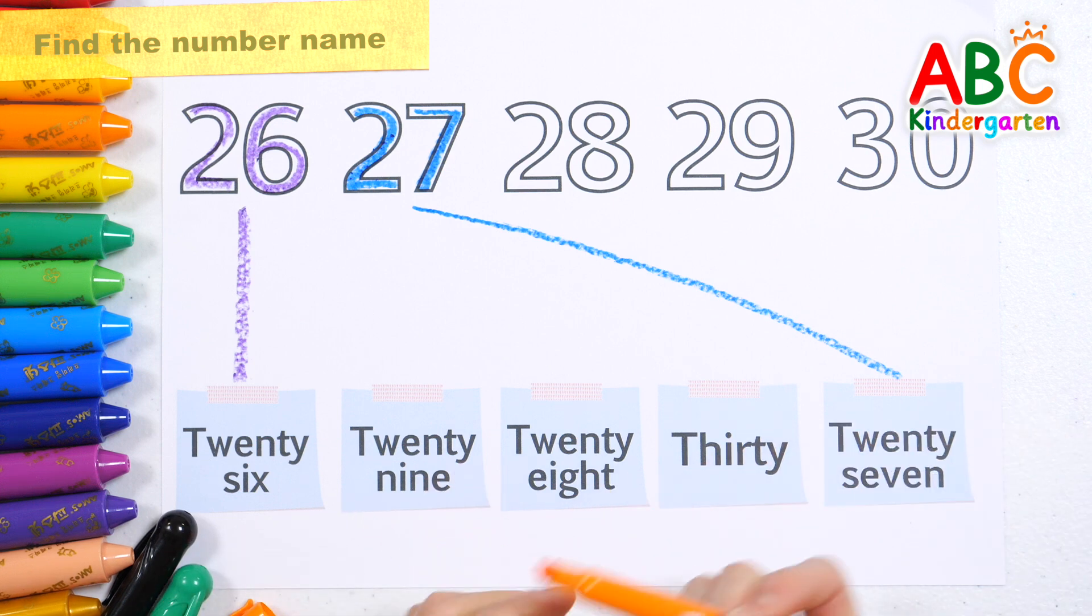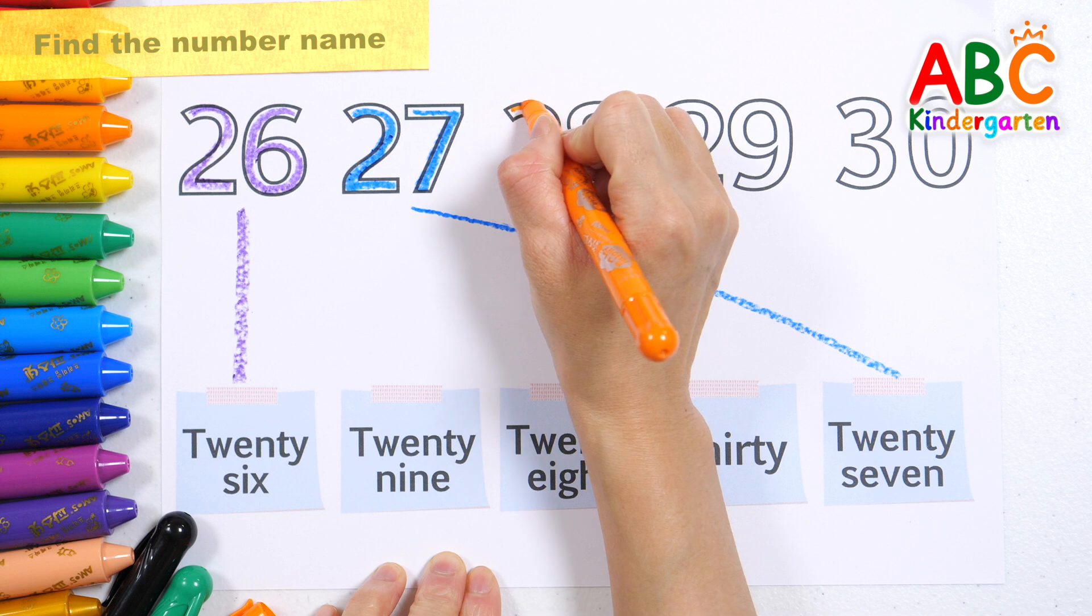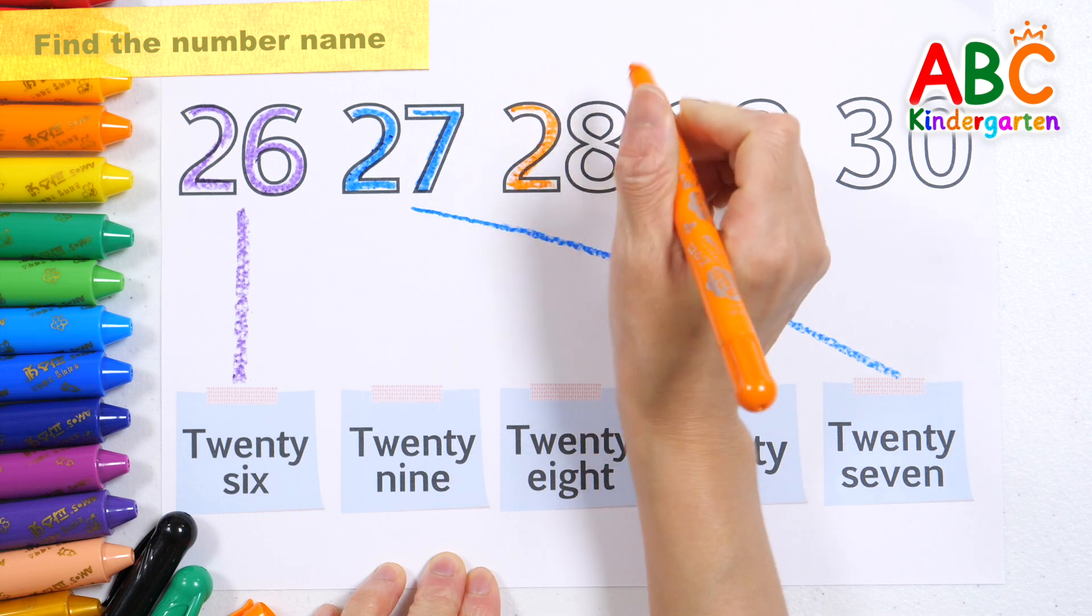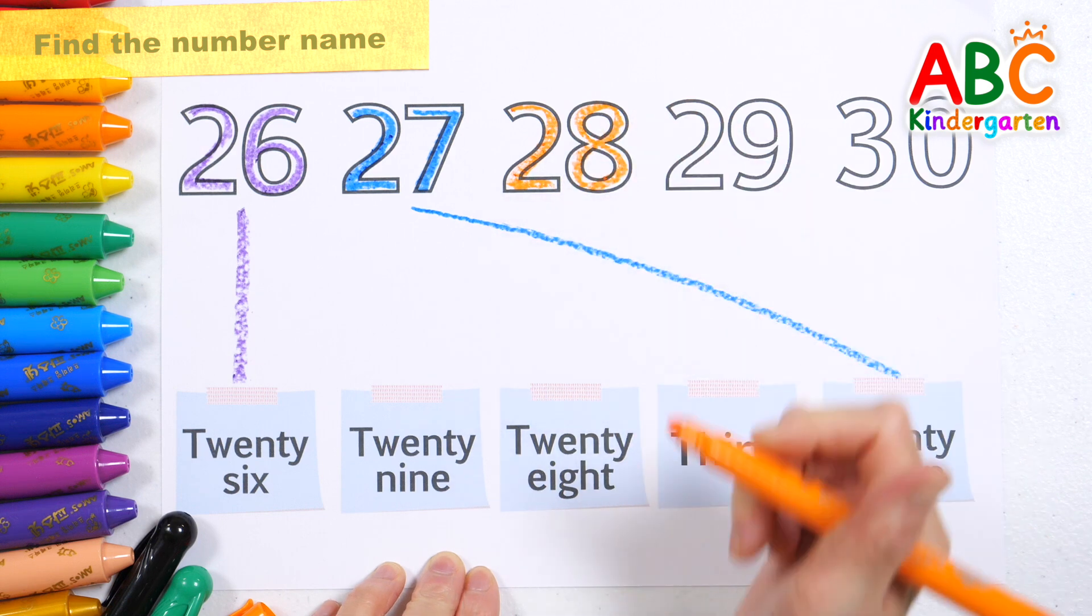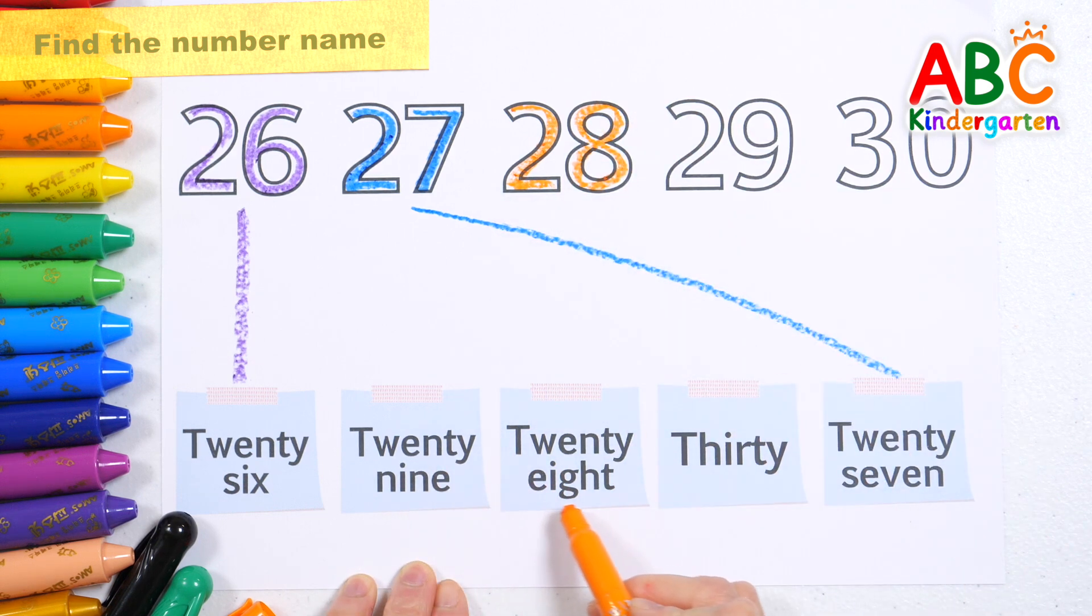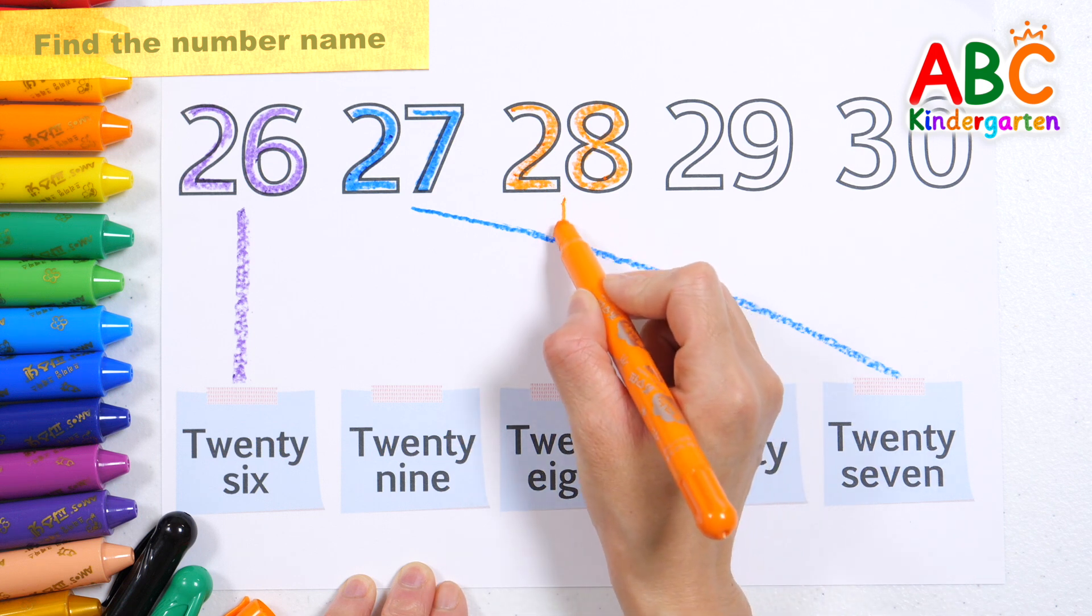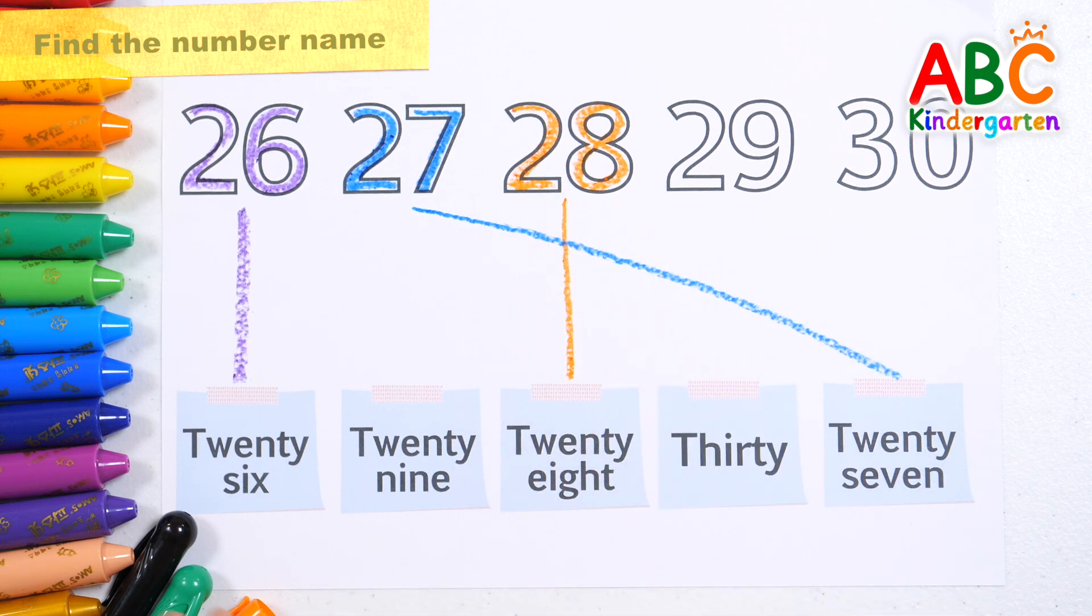This old man, he played seven. He played knick-knack up in heaven with a knick-knack. Give a dog a bone. This old man came rolling home. 28. That's right. 28.